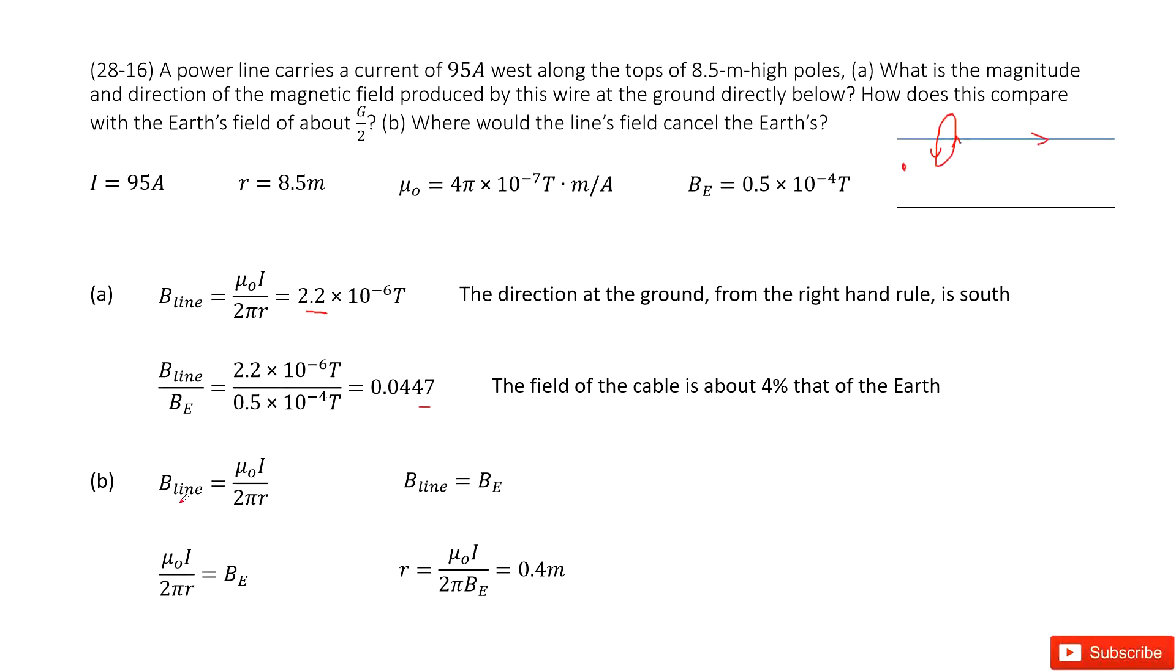So that means we write the B line, B wire, as μ₀I/(2πr). And then it should equal to the Earth's magnetic field in magnitude. So now from this equation, we can get the term for r. Input all the given quantities, we get the answer there.